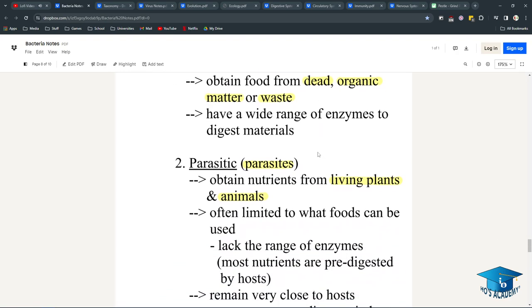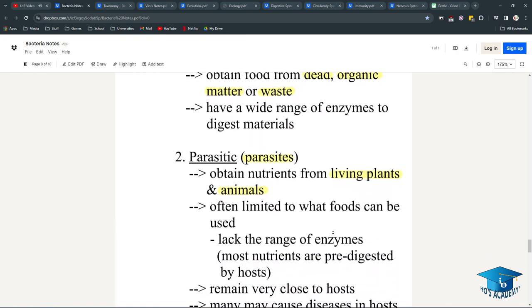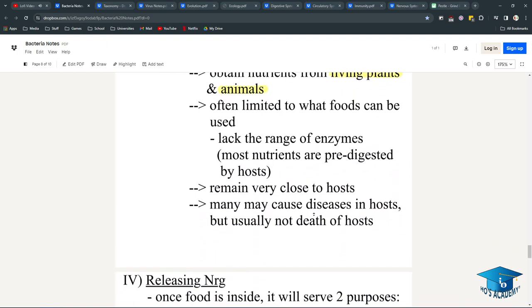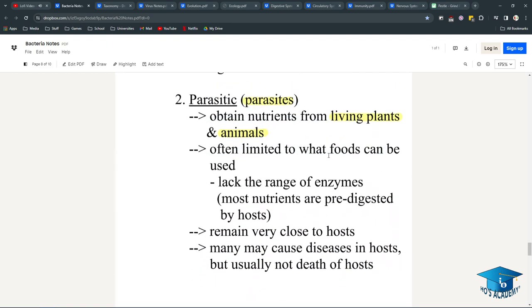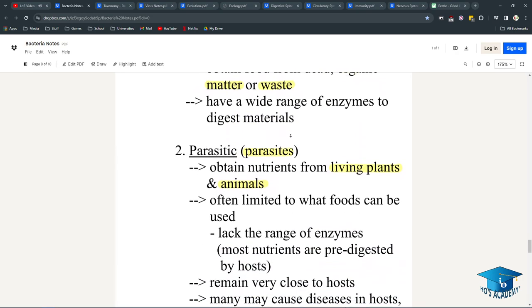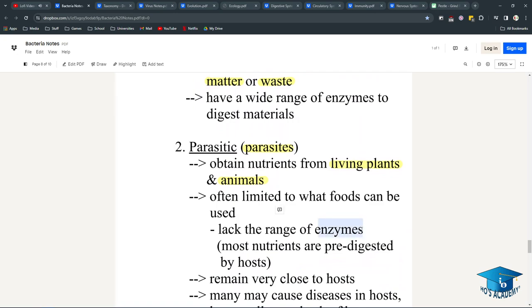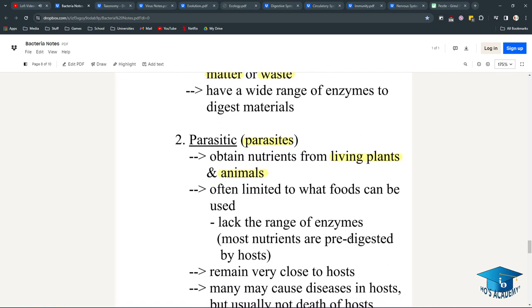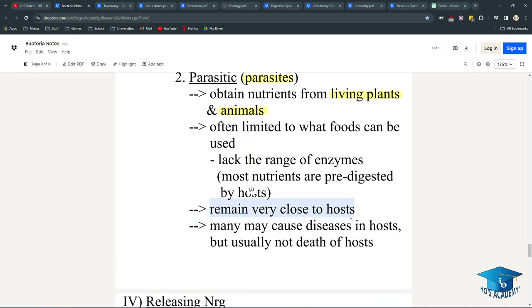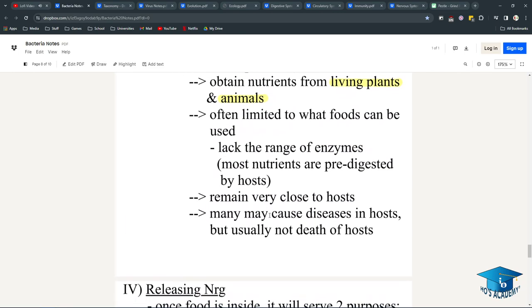There are parasites which obtain nutrients from currently living things like plants and animals, and they are limited to what foods can be used. For example, if they live inside humans, they'd be limited to whatever food they can get from us. They don't have the enzymes that saprophytic bacteria might have because they would just use the food that has been predigested by the host. They remain very close to the host and may cause diseases but usually not the death of the host because that's to their disadvantage—they would die without their food source.